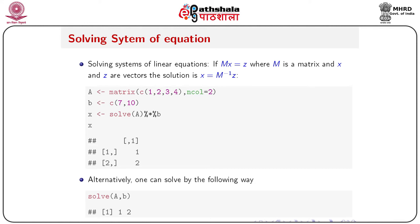For illustration, assign a two by two matrix A with elements c(1,2,3,4) and n column equals two, and vector b as c(7, 10). To solve for x, you can write solve(A) %*% b, which gives the solution x as 1 and 2. Alternatively, you can pass both A and b together into solve(A, b) separated by a comma, and it will directly give the solution without needing the separate multiplication step.